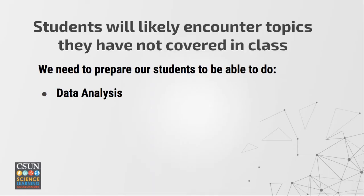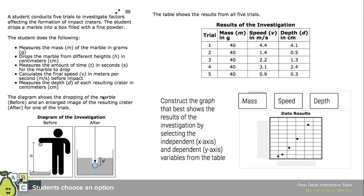Students are likely going to encounter topics they haven't covered in class, so we need to teach them data analysis. Here's an example of a middle school performance task in physical science — it's about an imaginary classroom investigation into the factors affecting the formation of impact craters. Even if your students have never done impact craters, there's still information in here they'll be able to use. This is typical for performance tasks, with lots of context that sets up the problem.